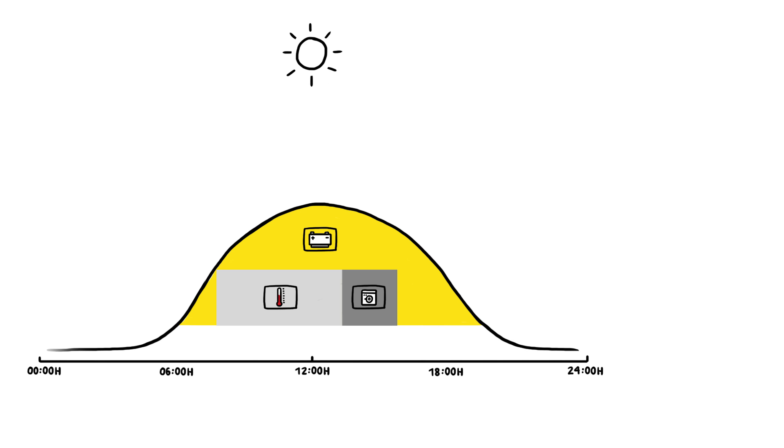It knows all the device's energy demands, retrieves the weather forecast from the internet, and plans intelligently so that Paul can use his solar electricity whenever he likes.